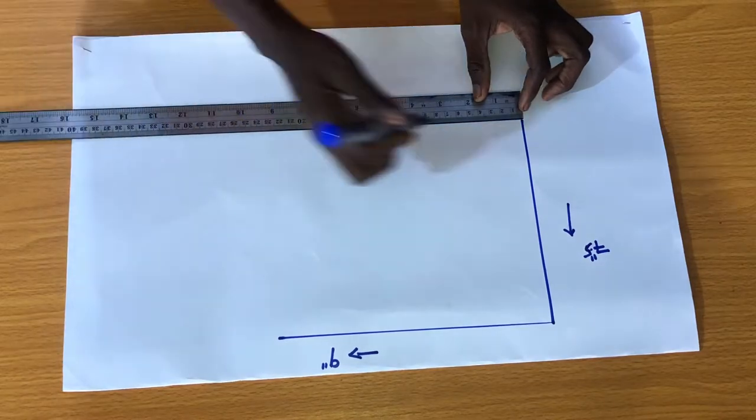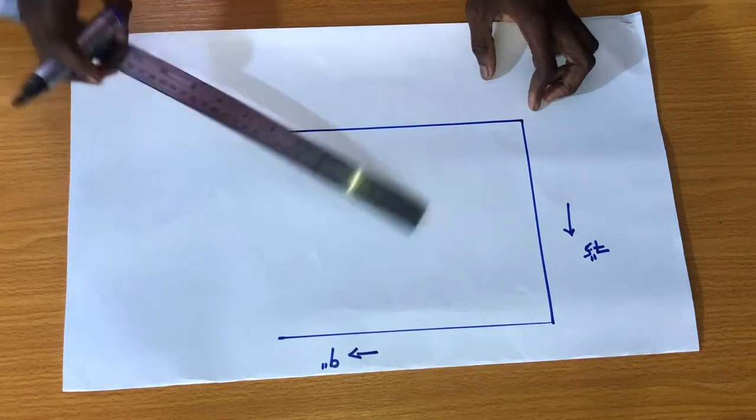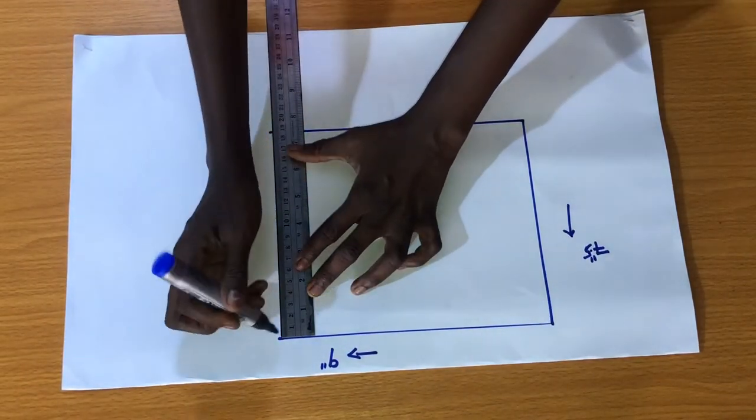Now I'll create a square shape by connecting the points together, making sure that the horizontal line is also nine inches and the vertical line is 7.5 inches as shown.